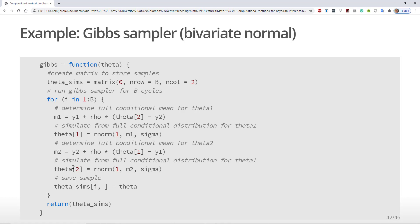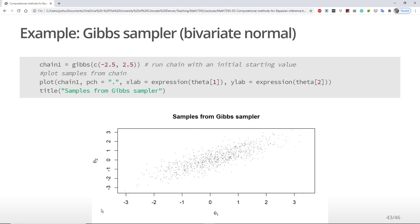I then draw from the full conditional distribution of theta2 and update the value of theta2. Now that I've completed a cycle, I store the new values of theta in my storage matrix. After I do this b times, I then return the values of my chain.